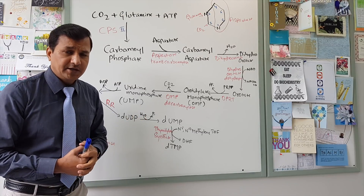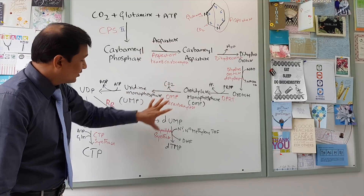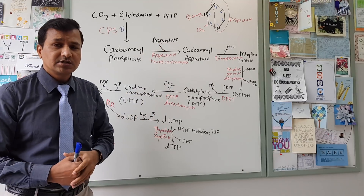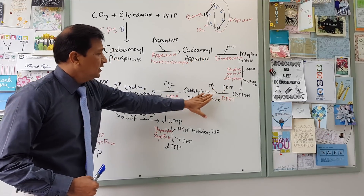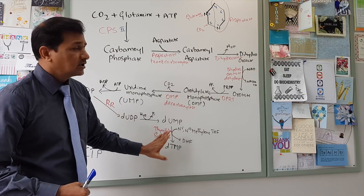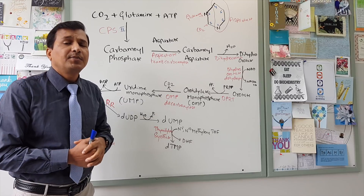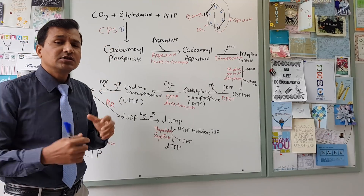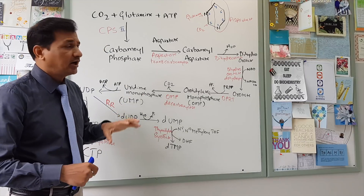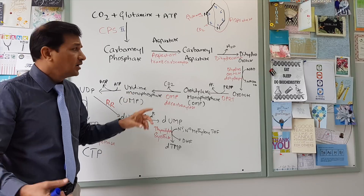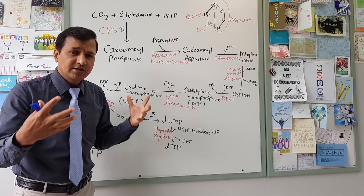The rate-limiting step is the one which determines whether or not pyrimidines are synthesized. Only when carbamyl aspartate is made will you get pyrimidines. Just making carbamyl phosphate doesn't guarantee pyrimidine synthesis, because carbamyl phosphate is also synthesized in the urea cycle — but that is in the mitochondria. That is why CPS1 is not the rate-limiting step; it is the aspartate transcarbamylase-catalyzed reaction that is rate-limiting.